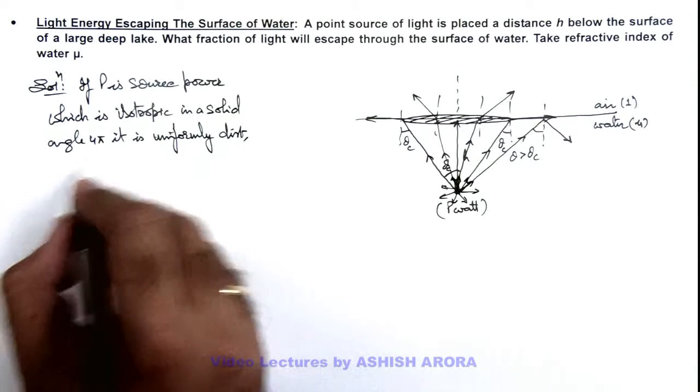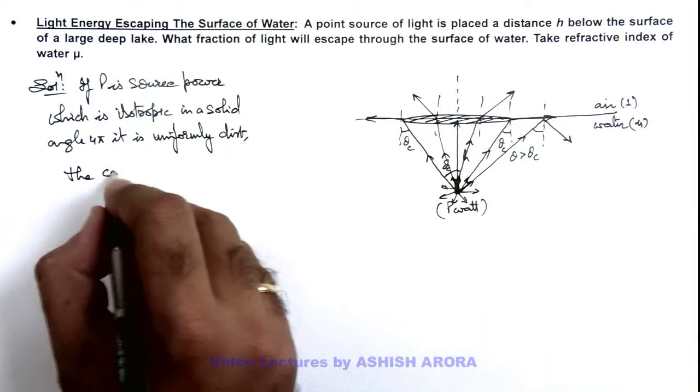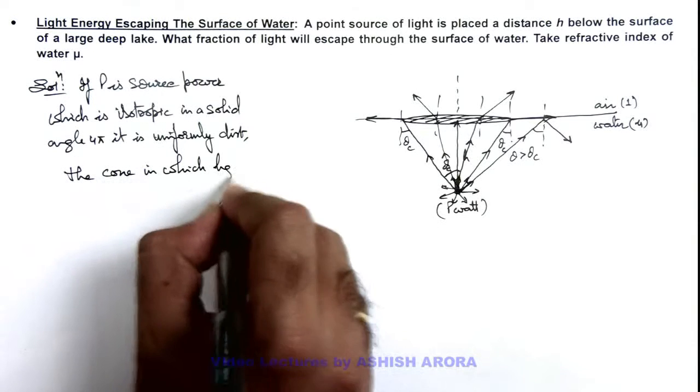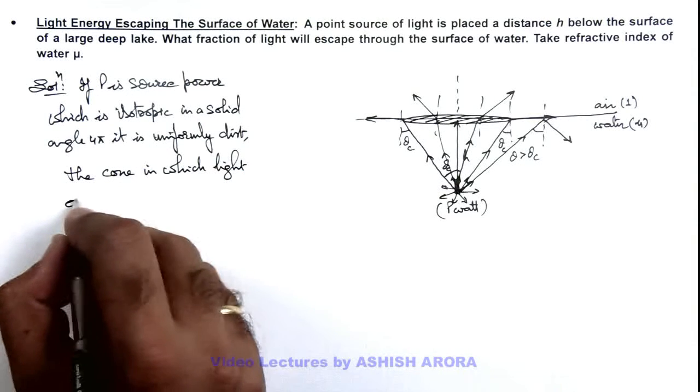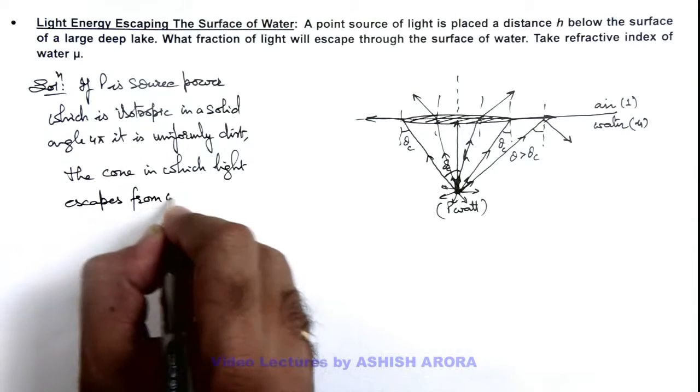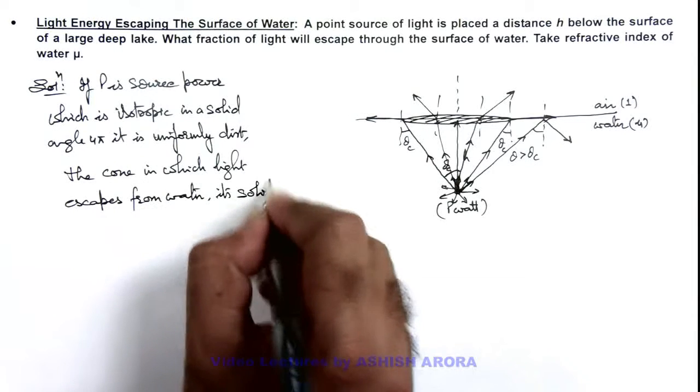the cone in which light escapes from water. Its solid angle can be given as, here the solid angle of this conical surface in which the light is escaping can be written as